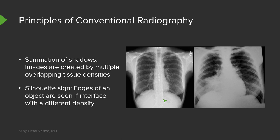We have the thoracic spine, the heart, and the mediastinal structures all overlapping with each other here. You can also see that it's difficult to differentiate between something going on in the lung and the right heart border — this is an example of the silhouette sign. What's going on here is actually an area of pneumonia that is silhouetting the right heart border. If you look at the left heart border, it interfaces with normal lung, so we do see it well because it's two objects of different densities.